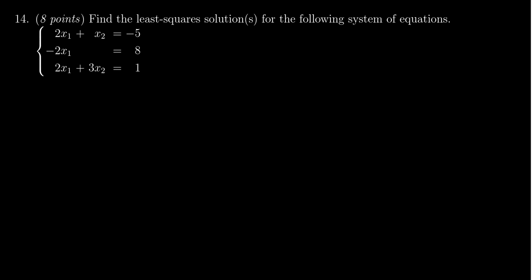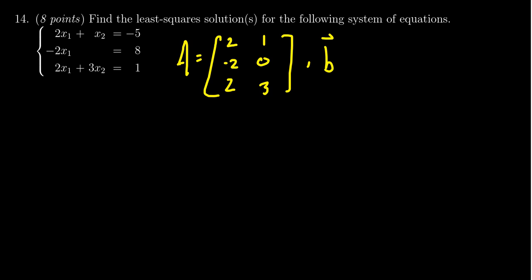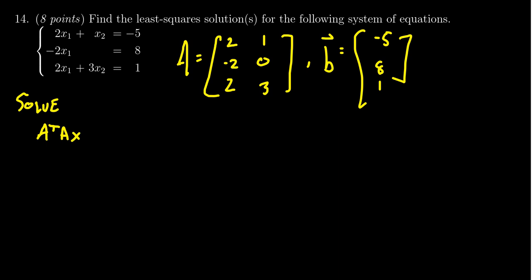To find that, we first recognize the coefficient matrix A, which is [2, 1; -2, 0; 2, 3], and the vector b, which is [-5, 8, 1]. What we need to do is solve the normal equations, which look like A transpose A times x̂ equals A transpose b. Normally we'd solve Ax = b for the linear system, but here we want the least squares solution, so we use the normal equations instead.